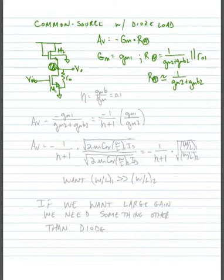I'm going to introduce a variable here called eta, which is equal to GMB divided by GM. So, it's the ratio of the front gate transconductance to the back gate transconductance,